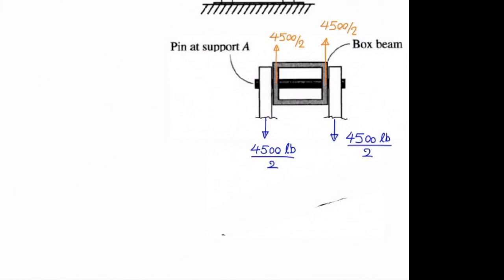To show that why did I consider circular cross section, let me take out that pin. This is the pin that we talked about. There are two 4,500 pound over 2 acting on two sides of this pin. And there are two reaction forces going upward. And this force passes through this cross section area, which is a circle. That's why we consider it circle for the cross section area.